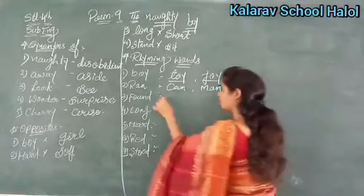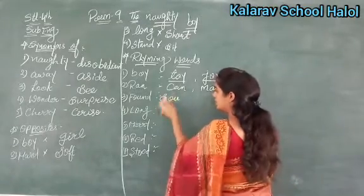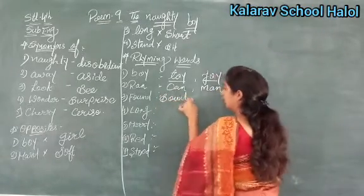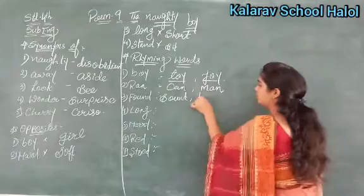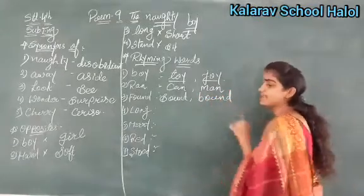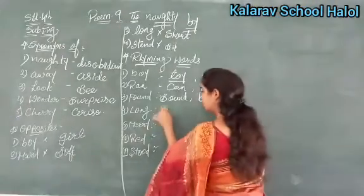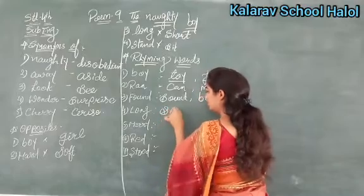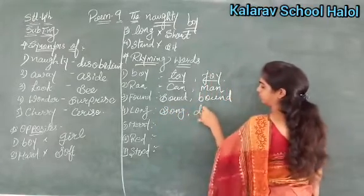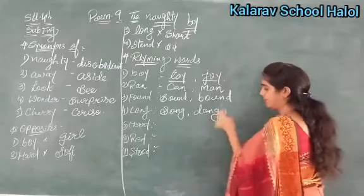What is the third number? Found. So for found: sound and bound. Okay. Next is long. So for long: song, and gong.